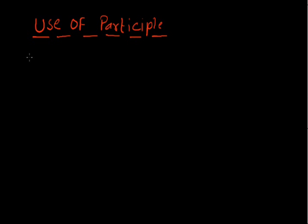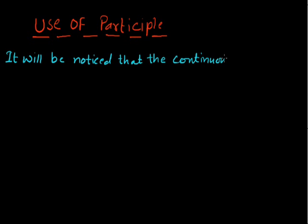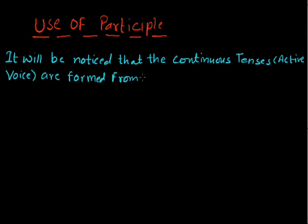It will be noticed that the continuous tenses in active voice are formed from the present participle with tenses of the verb 'be'. We know it well that in the present continuous tense, or in any type of continuous tense, we use the -ing form, which is the present participle.